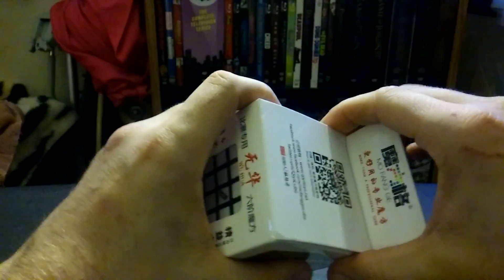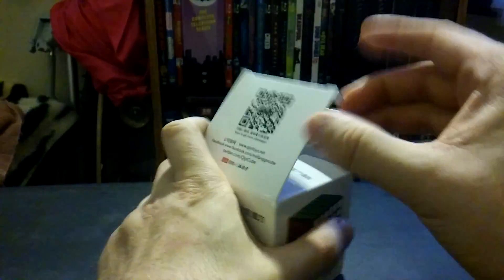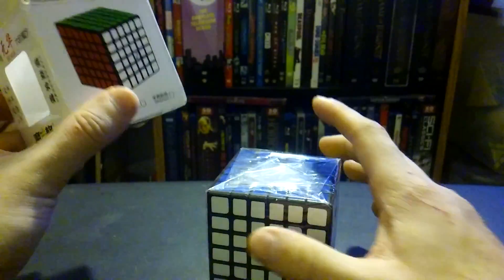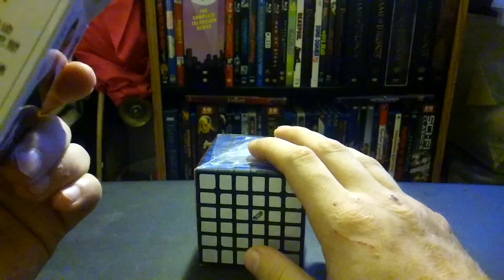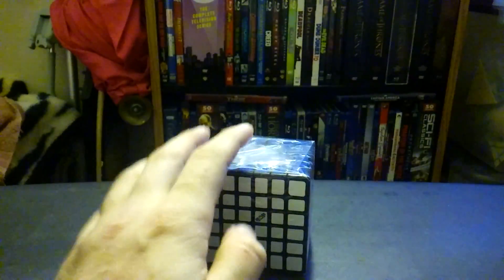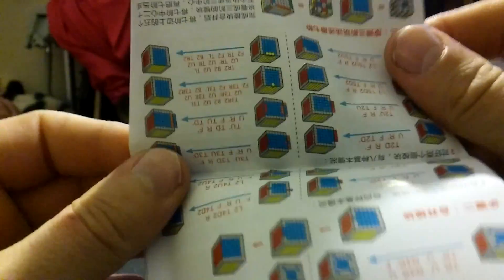So yeah, my last 6x6 broke again. Oh, they did include a pamphlet, okay that's cool. So we have Chinese, I think, and it just kind of tells you how to solve it. Look at that, upside down, but hey whatever, it's all good.